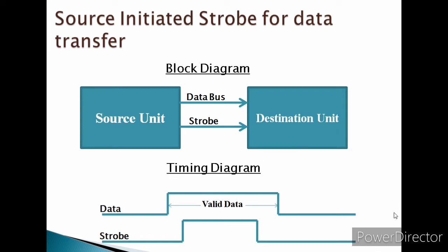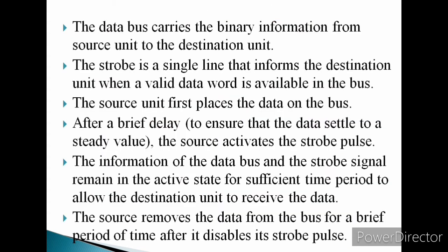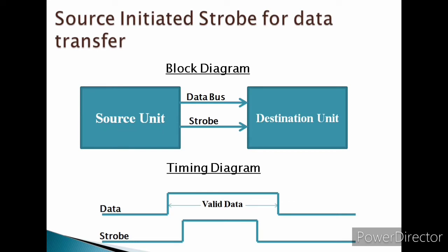For example, consider a CPU as a source unit and a memory unit as a destination. The CPU places a word on the data bus and informs the memory unit that this is a write operation.